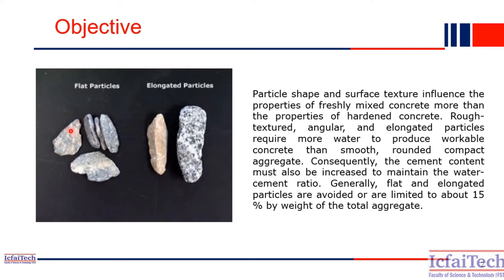Each particle has three dimensions. If a particle is very thin, then when load is applied to that aggregate, the load distribution may not be uniform. The same issue happens with elongated particles. If one dimension of an aggregate is very long compared to the other two, we call it an elongated aggregate. If the aggregate is very thin, we call it a flat particle and consider the flakiness index for such particles.